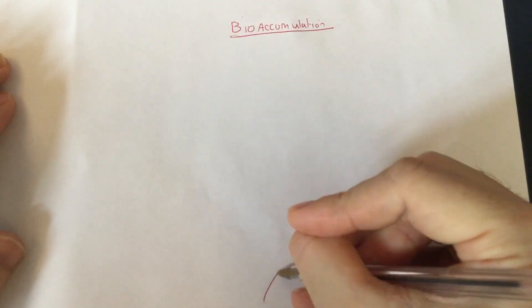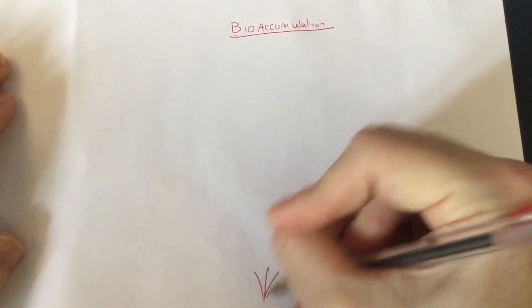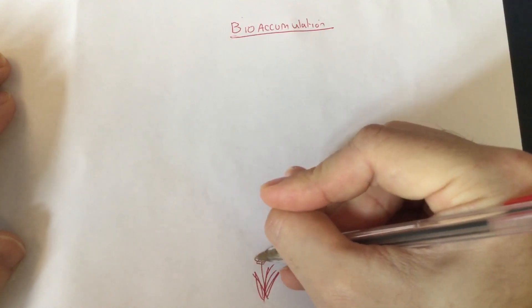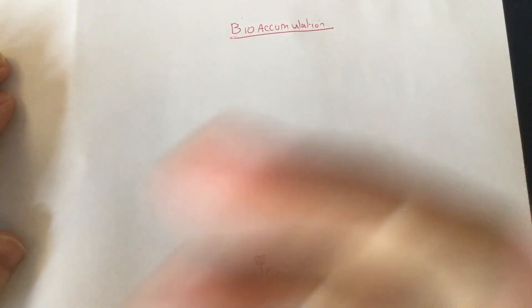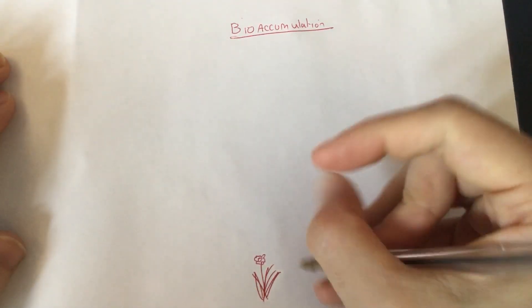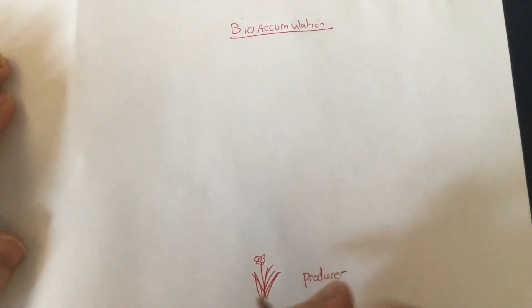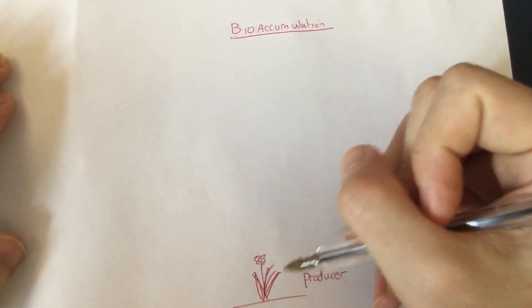At the bottom of our food chain we are going to have a plant. This could be some grass or something like that. I'm going to give mine a little flower. So that is my plant at the bottom. We call that the producer because it produces the food, in this case using the energy from sunlight.